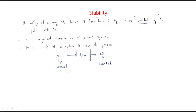So bounded means not infinite — it must be defined. If the system satisfies this condition, we call it a stable system or a stable transfer function. If the system is stable, we can perform any operation on the system. If the system is not stable, it is not possible to perform any operation on it.